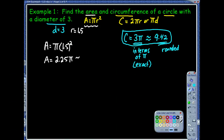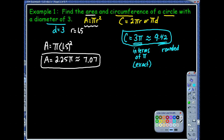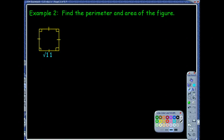If I rounded it to two decimal places, it would be 7.07 — because it's really 7.068, but the 8 behind the 6 does round it up. The question might be: which answer do I want? We're pretty flexible right now. Later on, we're going to be specific — I want the rounded answer, I want the answer in terms of pi. If it says to round, then that's definitely what you want to do.